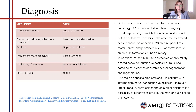On the basis of neuroconduction studies and nerve pathology, CMT is subdivided into two main groups. The demyelinating form — CMT1 if autosomal dominant, CMT type 4 if autosomal recessive — is characterized by slowed neuroconduction velocities less than 38 meters per second in upper limb motor nerves and prominent myelin abnormalities such as onion bulb formations at nerve biopsy. The axonal form, CMT2, has preserved or only mildly slowed neuroconduction velocities above 38 meters per second and pathological evidence of chronic axonal degeneration and regeneration. The main diagnostic problems occur in patients with intermediate neurophysiological results, which should alert clinicians to other types such as X-linked CMT.